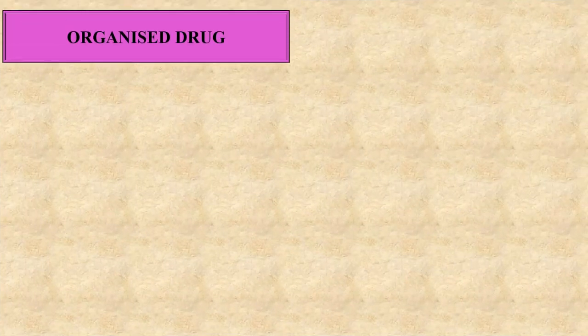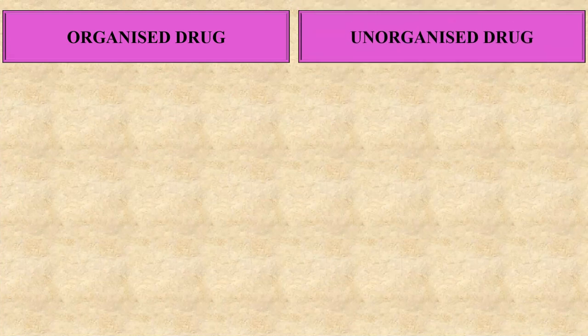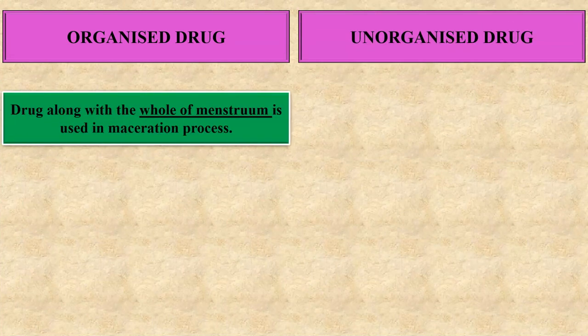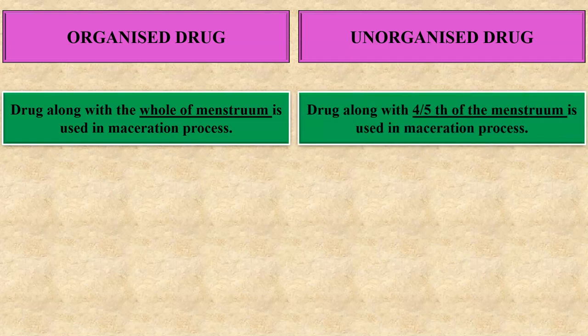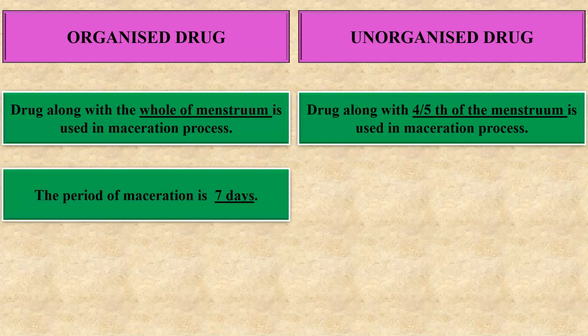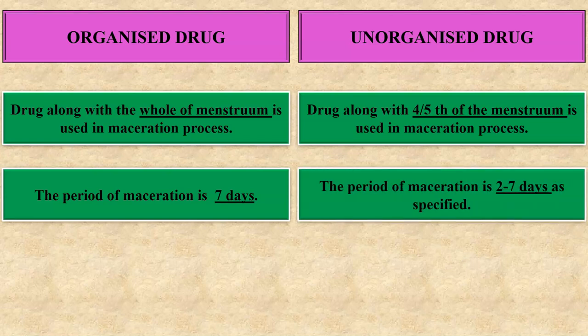Let us start with the difference between organized drug and unorganized drug. In organized drug, the drug along with the whole of the menstruum is used in the maceration process, whereas in unorganized drug, the drug along with four-fifths of the menstruum is used. The period of maceration is seven days for organized drug, whereas for unorganized drug, the period is two to seven days as specified.